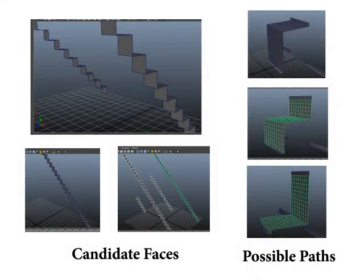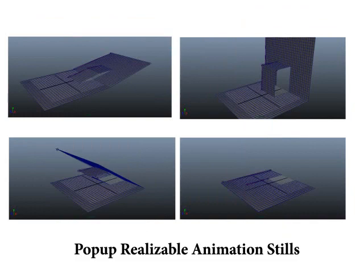The next major step we implemented — which we developed on our own as it was not included in the paper — was an animation of the realizable pop-up foldable surface, to demonstrate that the model is acceptable for creating a paper architecture.